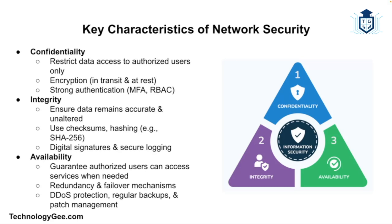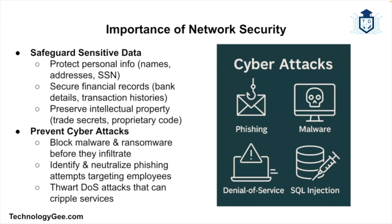Here are the key characteristics of network security. The first is confidentiality, which ensures that sensitive information is accessible only to authorized users. Then there's integrity, which ensures that data remains accurate and unaltered during transmission and storage. And then you have availability, which ensures that network services and resources are available to authorized users when needed.